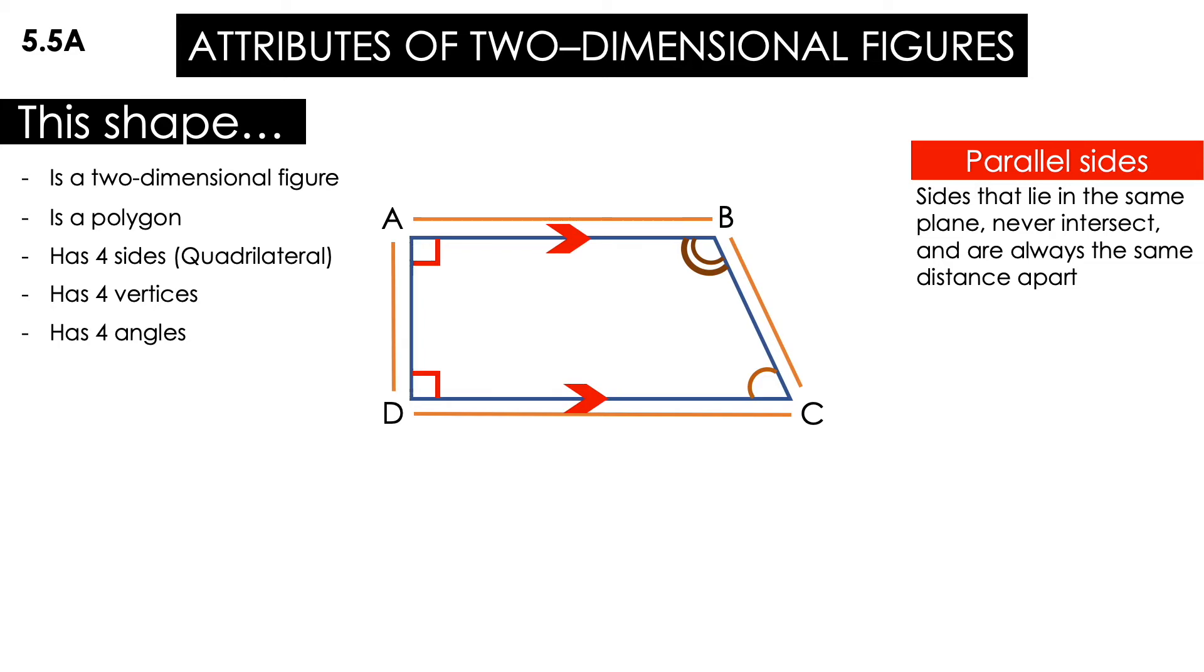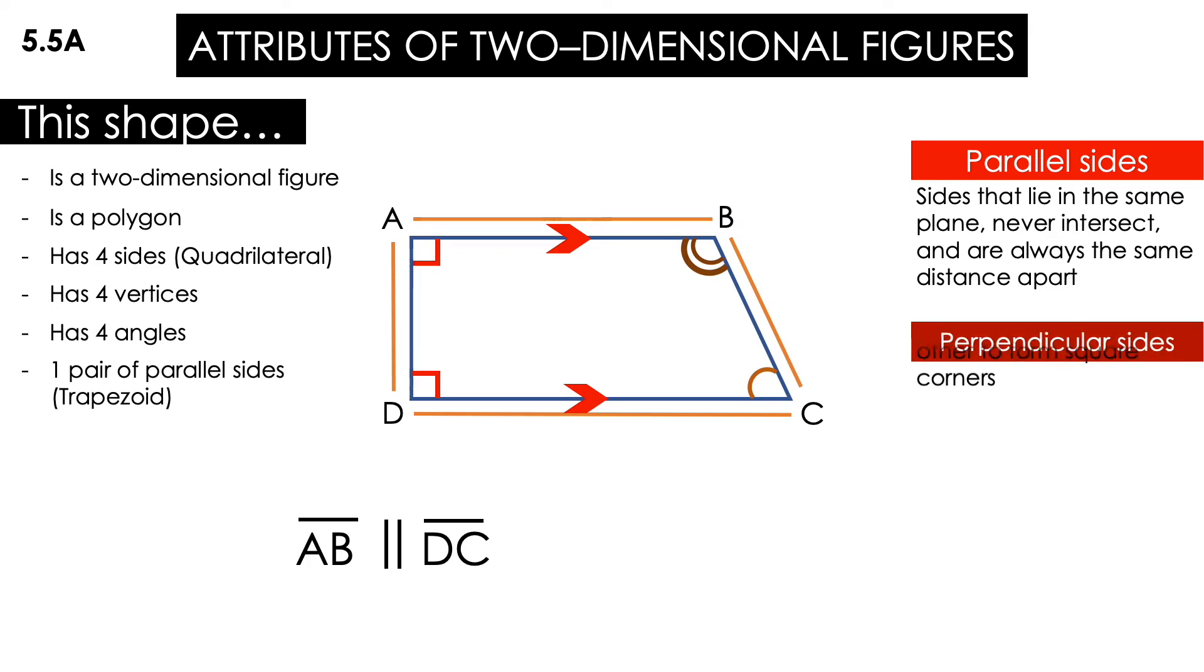However, AD is not parallel with BC. So, the only parallel sides that we have are these. Look, the little two lines in the middle means that they are parallel, right? Now, that means that I have only one pair of parallel sides. That means that this shape is a trapezoid.